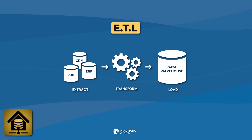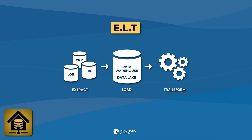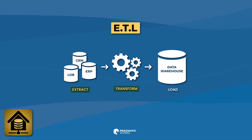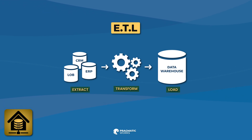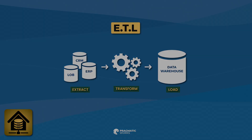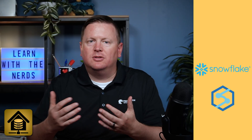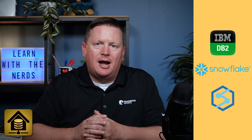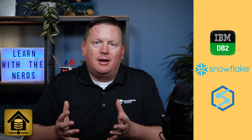There's also ELT — extract, load, transform — just the same acronym in a different order. This means that data is extracted from its original source, transformed to fit the warehouse schema — basically a design of how the data is going to be stored — and then loaded into the warehouse on a regular basis, which could be daily, weekly, or even multiple times a day. Some examples of a data warehouse include Azure Synapse, Amazon's and Google's offerings, Snowflake, and IBM's DB2 warehouses.